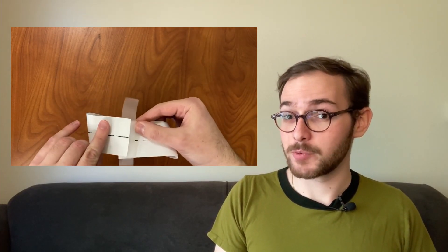If you take a strip of paper, make a half-twist, and tape the ends together, you get a Mobius strip.